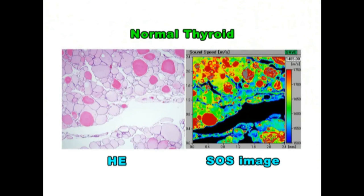This is a slide of normal thyroid follicles. Round follicles contain colloids of various densities. More condensed colloids show greater speed of sound.